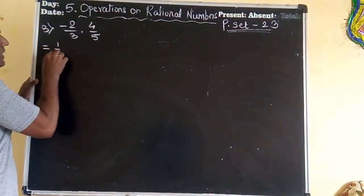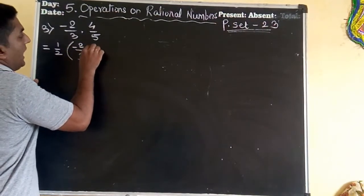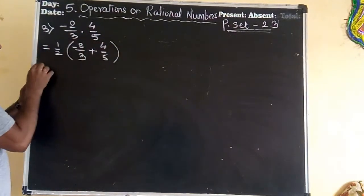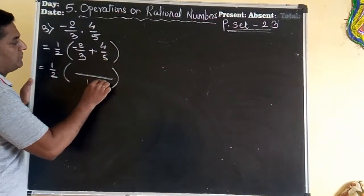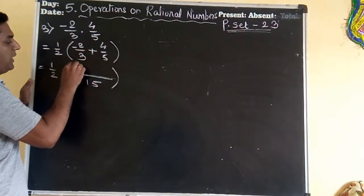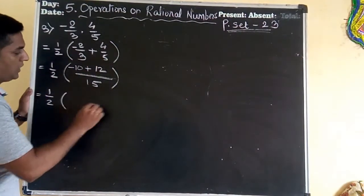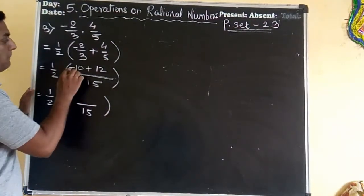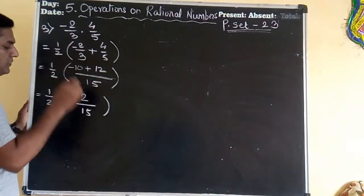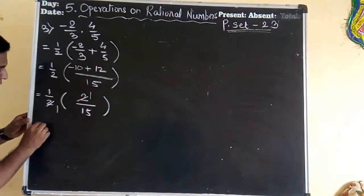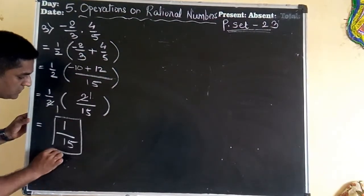Is equal to 1 upon 2, with cross multiplication: 3 × 5 = 15 as denominator, minus 5 × 2 = minus 10 and plus 3 × 4 = 12 as numerators. So it becomes 1 upon 2 × (minus 10 + 12) upon 15 = 1 upon 2 × 2 upon 15. Simplifying: 1 × 1 upon 1 × 15 = 1 upon 15. This is the first rational number.